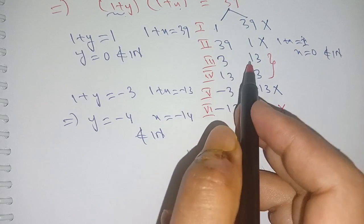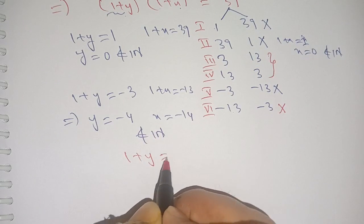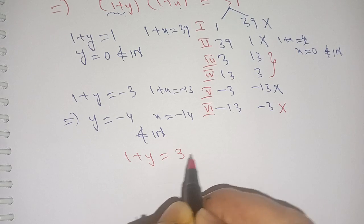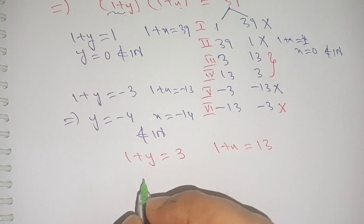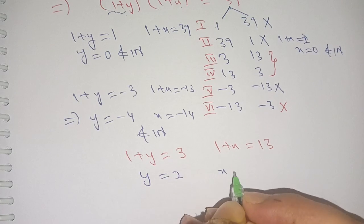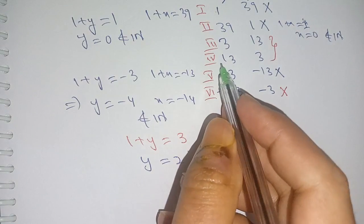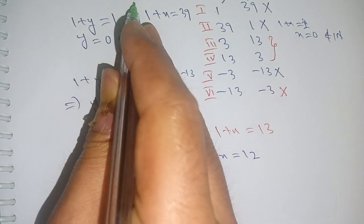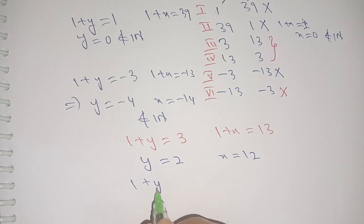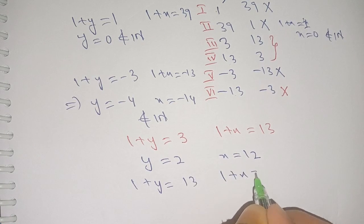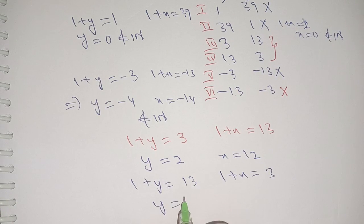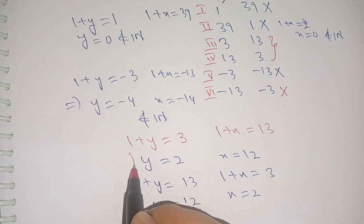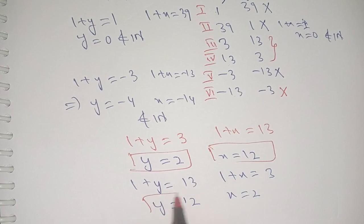For case 3, when the factors are 3 and 13: if 1 plus y is equal to 3, then 1 plus x is equal to 13, giving y equal to 2 and x equal to 12. For case 4, when 1 plus y is equal to 13, then 1 plus x is equal to 3, giving y equal to 12 and x equal to 2.